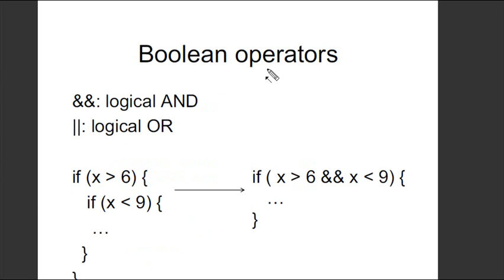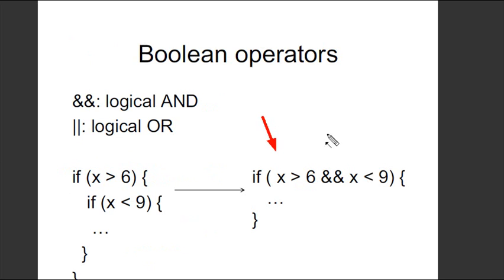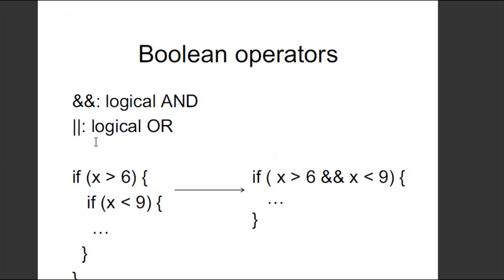You've already seen the logical operators: the double ampersand for AND and the two pipes for OR. If I want a conditional involving two values, I can check: is x greater than six AND less than nine? That checks a range using the logical operator. I use those all the time — very important. I don't usually go much beyond AND and OR, though it can get complicated.